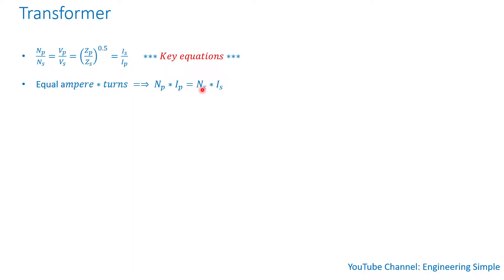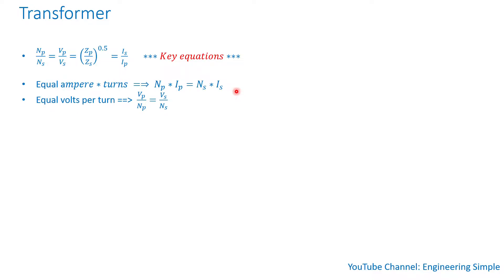We also have equal volts per turn. The primary voltage divided by the number of turns in the primary winding is equal to the secondary voltage divided by the number of turns in the secondary winding. This is another key concept.